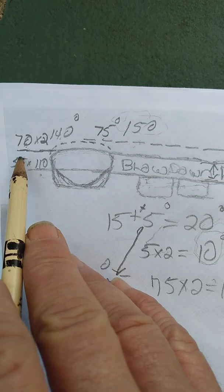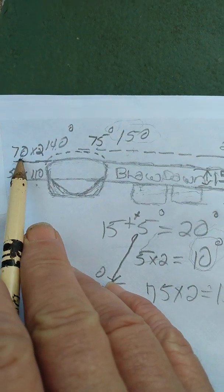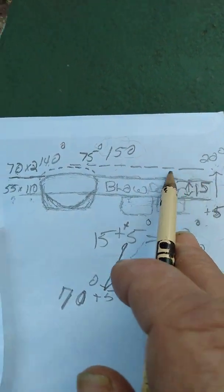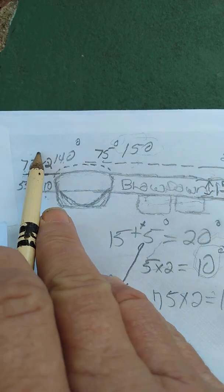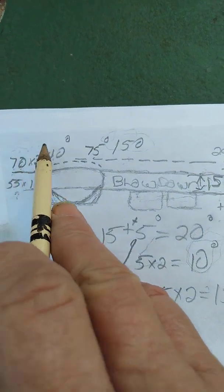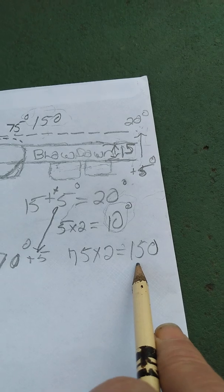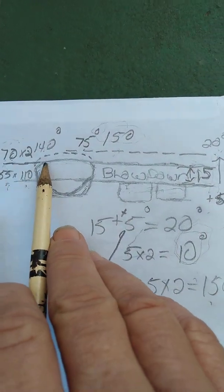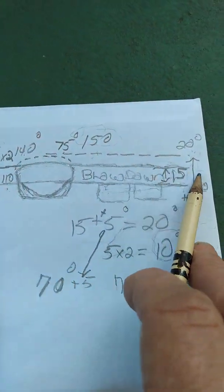So my old exhaust port opening was at 70. I told you to move it five degrees, that's going to make that 75 degrees. 75 times two will be 150 degrees overall duration. Simple stuff. If you look at the picture and see what's going on...